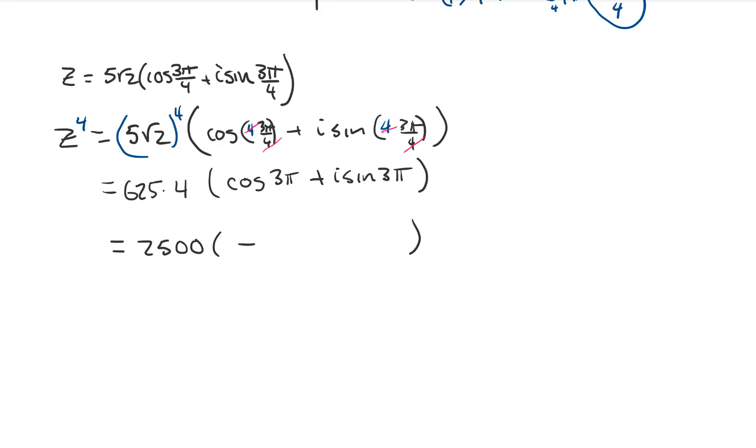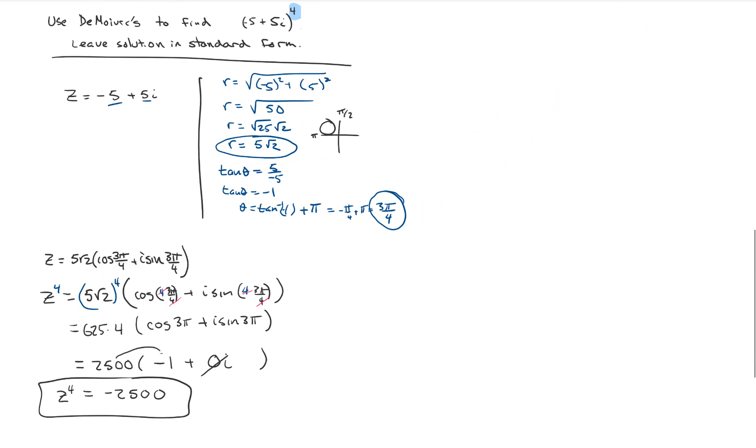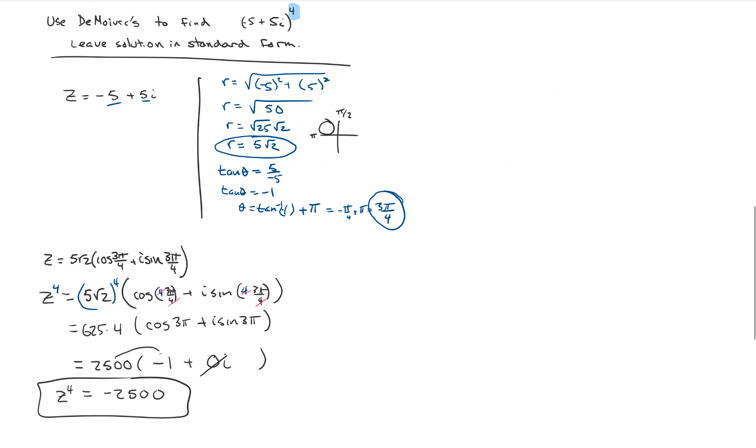All right, fascinating, 2500. Now cosine of 3 pi is the same thing as cosine of pi, so that's equal to negative 1. Sine of any multiple of pi is equal to 0, so we're going to get zero of those i's. We just bring this thing on in and we're going to find out that our answer is negative 2500.